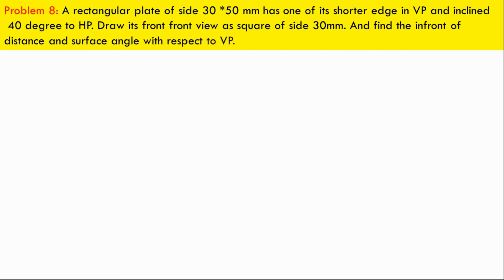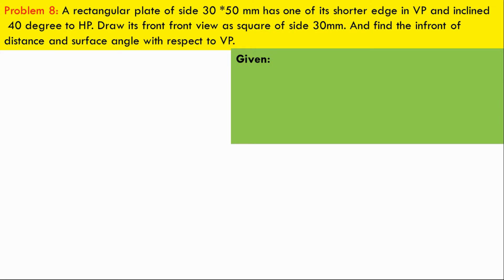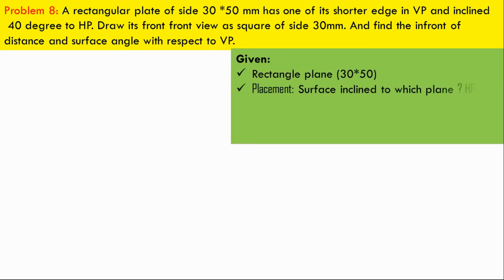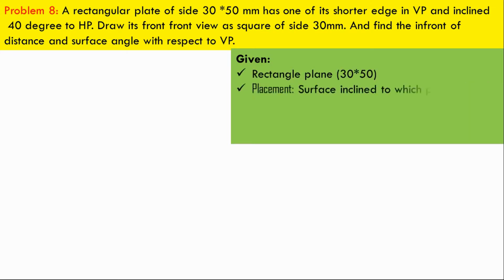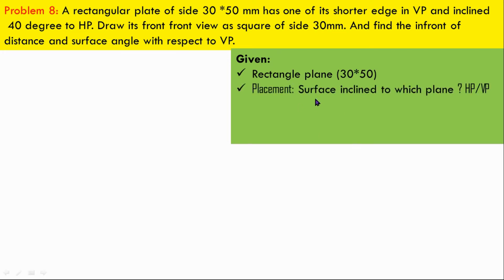What is the plane? This is a rectangular plane. The size is 30x50. The placement relates to HP and VP. The surface angle is the important key. These are the surface inclinations.